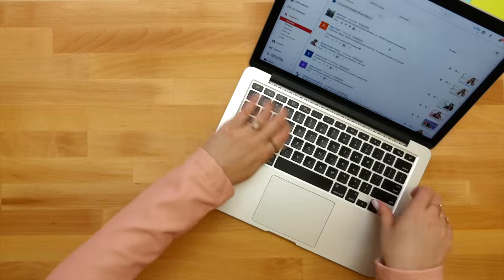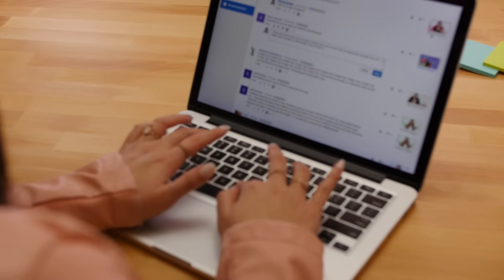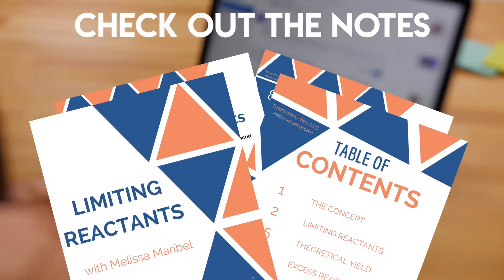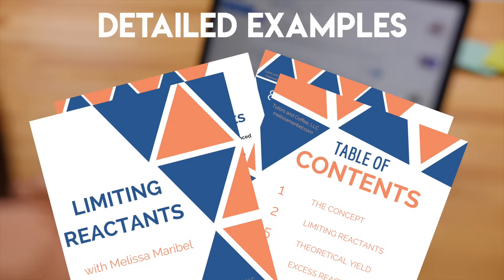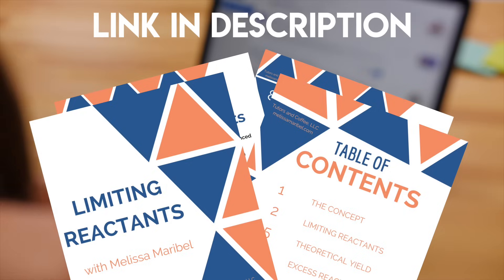I created detailed notes with examples that show every single step to find limiting reactants, excess reactants, theoretical yield, percent yield, actual yield — all the yields. The link is in the description box, make sure to check it out. Now I know this seems like a long process, but you can do this. Back when I learned this, I used to struggle with it too. But with practice and persistence, you will absolutely pull through. I'll see you in the next video — I'm off to answer your comments now. Bye-bye!